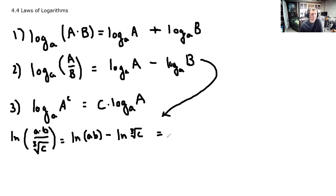Next, I'll use property 1. Now right here we've got A times B. So this is the natural log of A plus the natural log of B minus the natural log of the third root of C.